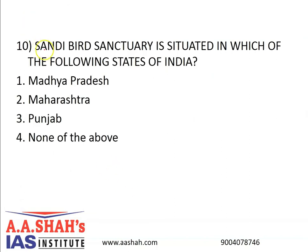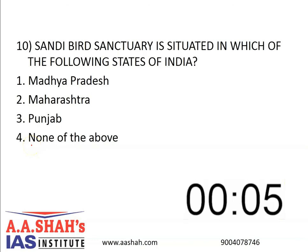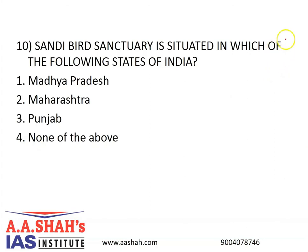The last question. Sunday Bird Sanctuary is situated in which of the following states of India? 1: Madhya Pradesh. 2: Maharashtra. 3: Punjab. 4: None of the above. The correct answer is none of the above — it is in fact in Uttar Pradesh. The Sunday Bird Sanctuary is in Hardoi, Uttar Pradesh. It is a freshwater marsh, also designated as an important bird area by BirdLife International, and is also known by its ancient name as Dahar Jheel.